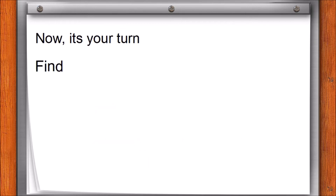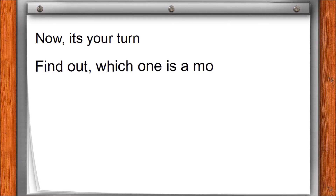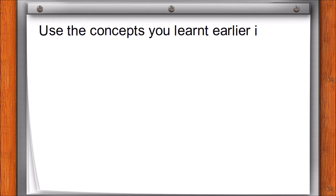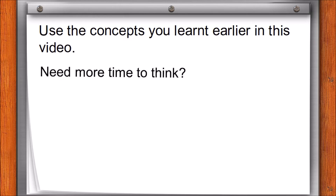Now it's your turn. Find out which one is a monomial: 4x squared, or minus 7y plus 5. Think. Use the concepts you learnt earlier in this video. If you need more time to think, pause the video and check the answer once you are ready.